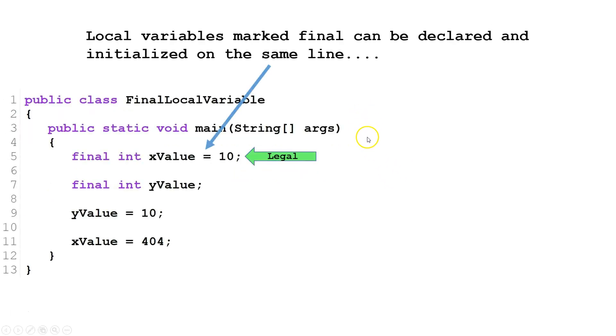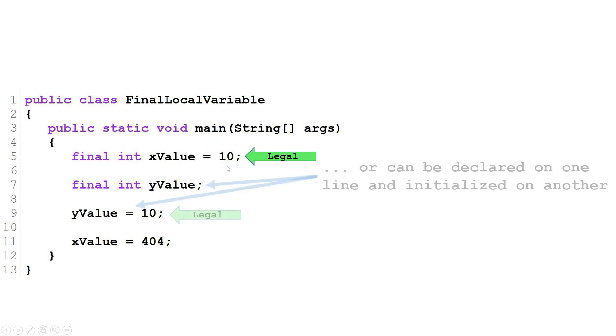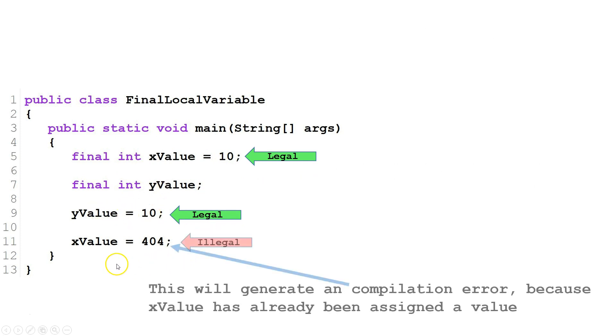Here we have two examples of final local variables. There's two ways we can initialize them. We can either initialize them on the same line where they are declared, or we can declare them on one line and initialize them on another line. Line 11 is not legal because x value has already been initialized.